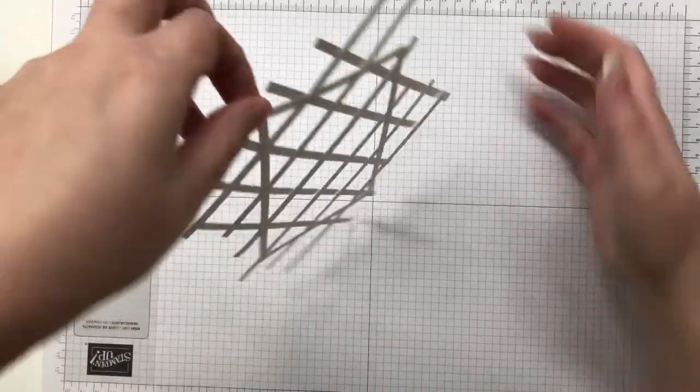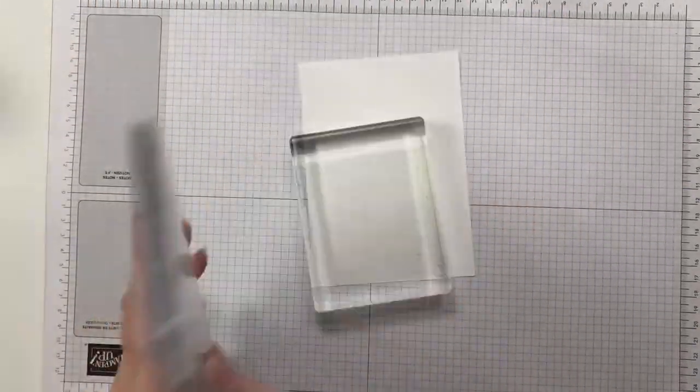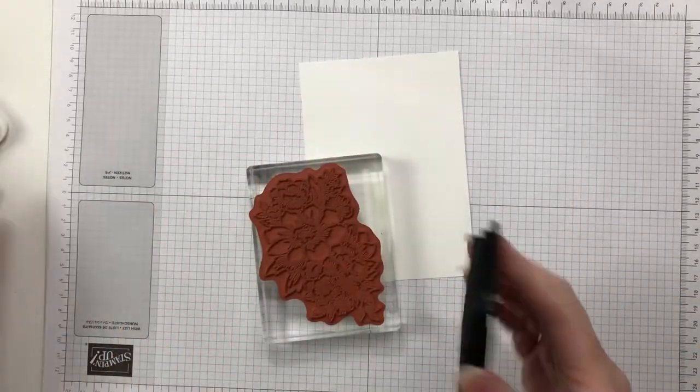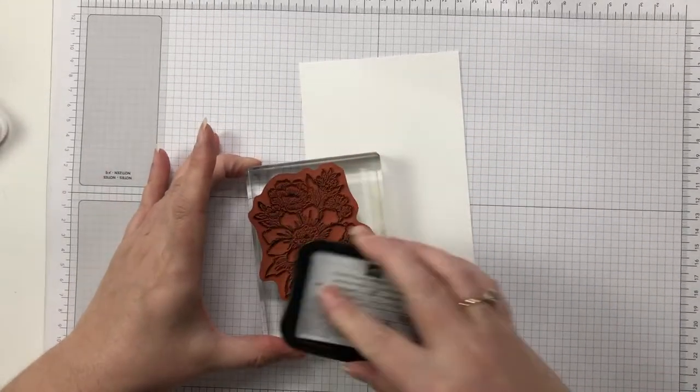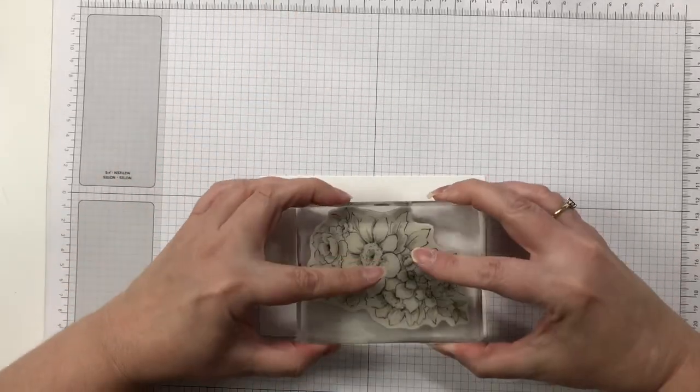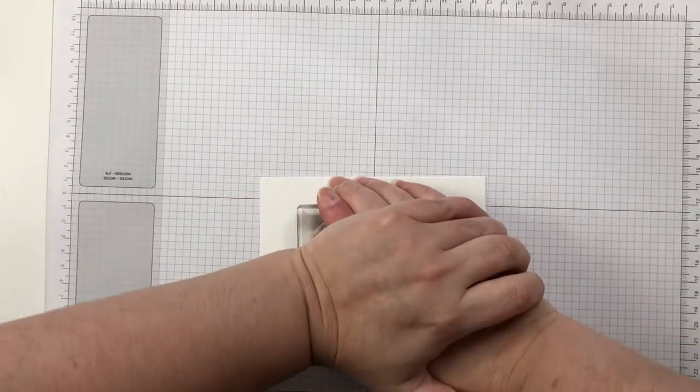All you need to do now, you can see the framework already, pop that aside and let it dry. Don't begin to cut it apart or anything now, just give it a really good chance to dry. And while that dries we move on with the rest of the elements of the card.